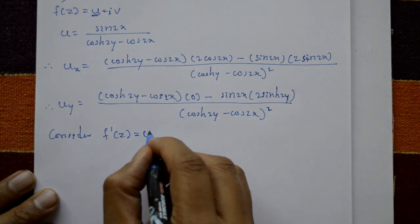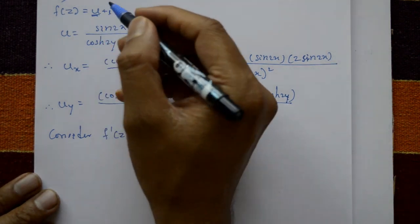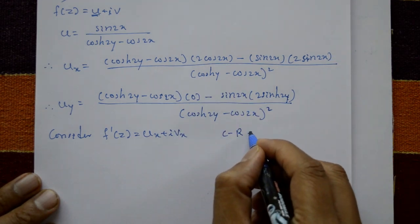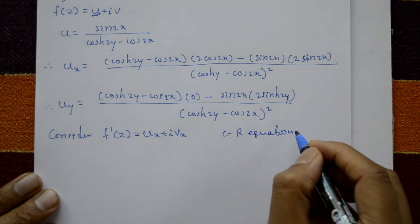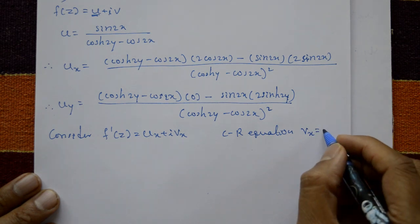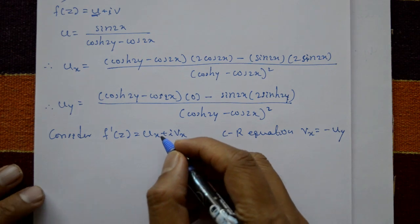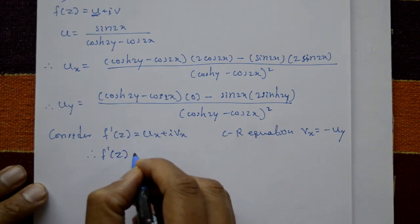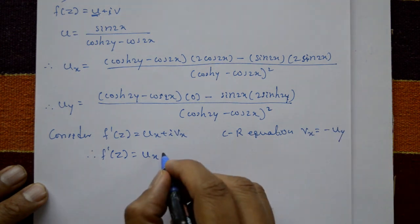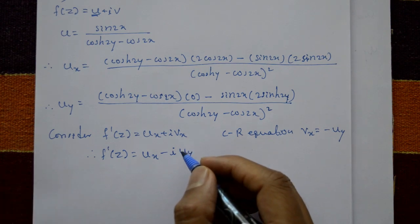Consider f'(z) = u_x + i·v_x. The real part is given, and using the Cauchy-Riemann equation: v_x = -∂u/∂y. Therefore f'(z) = u_x + i·v_x = u_x - i·u_y.